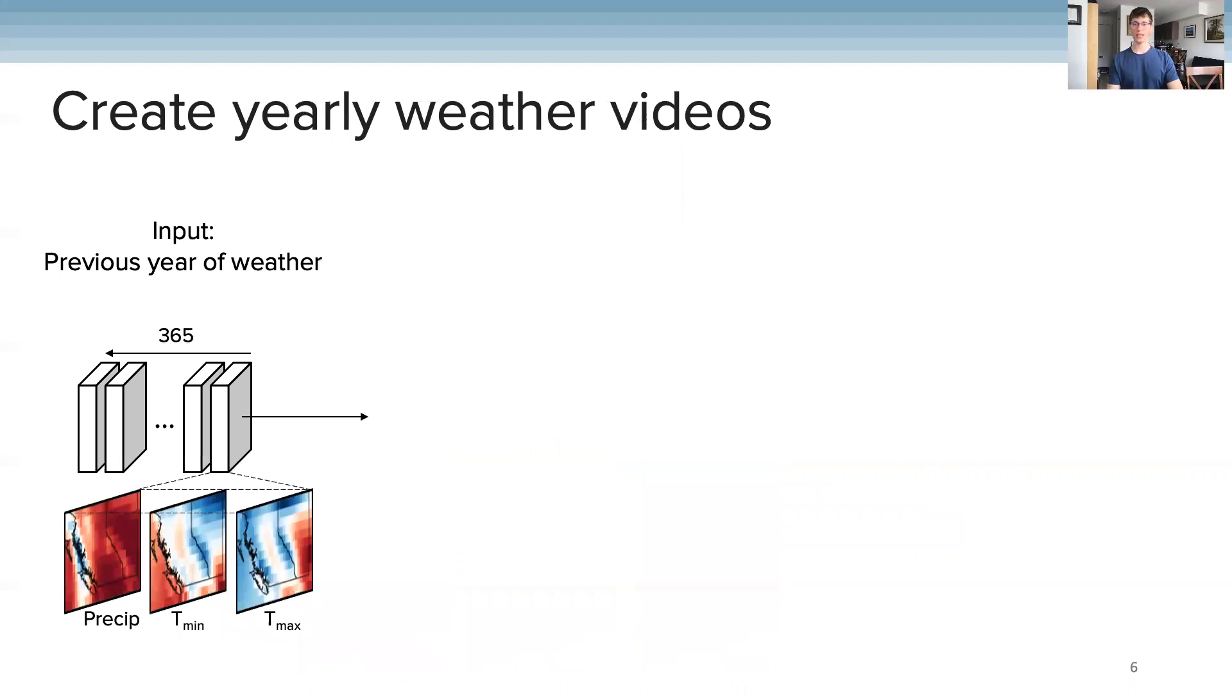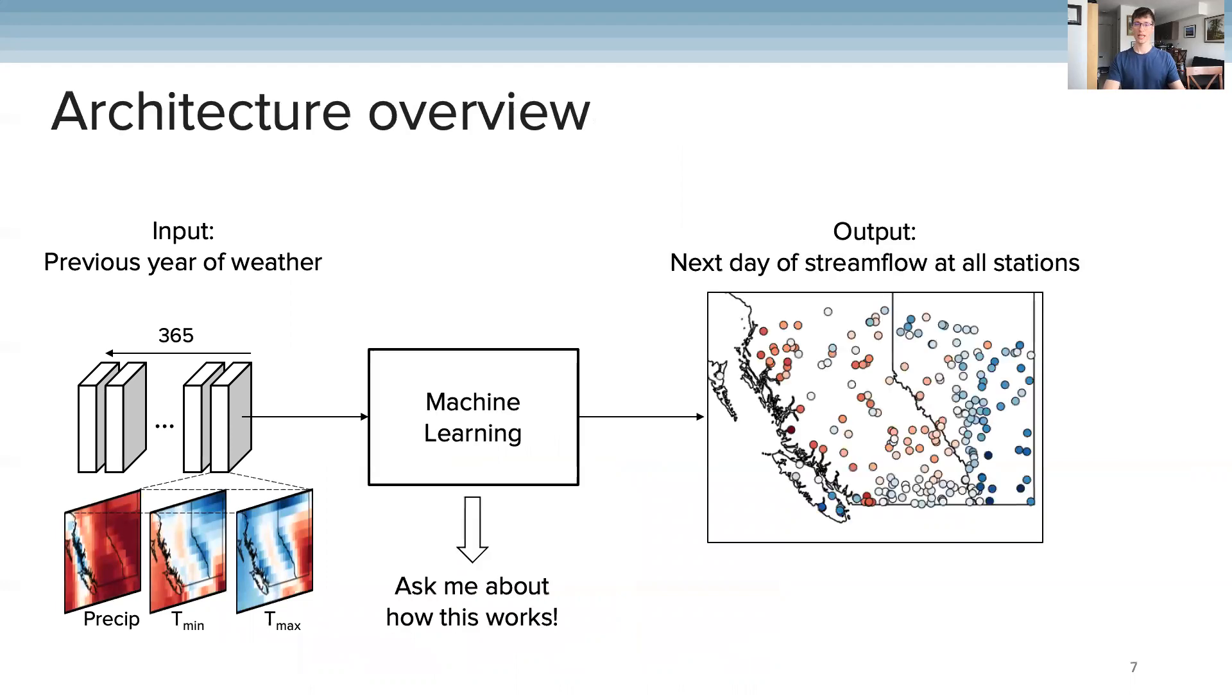Then we create year-long weather videos, where each frame is a weather image from the past year. Using the past year of weather through a machine learning model, we can predict streamflow of the next day at all stations throughout the region. This machine learning model is really cool with interesting spatial and temporal components, so if you have questions about the details, please come chat with me after.